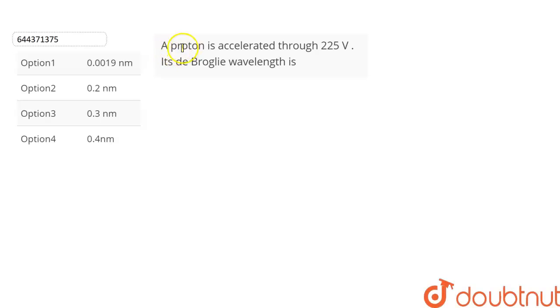The question is: a proton is accelerated through 225 volts and we have to find its de Broglie wavelength. We are given four options from which we have to choose the correct option. Let's find out.